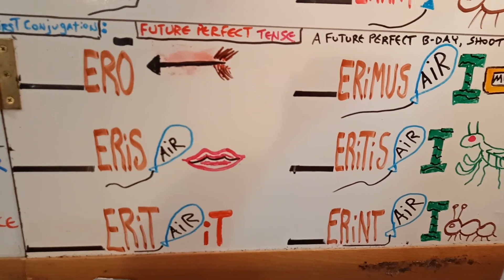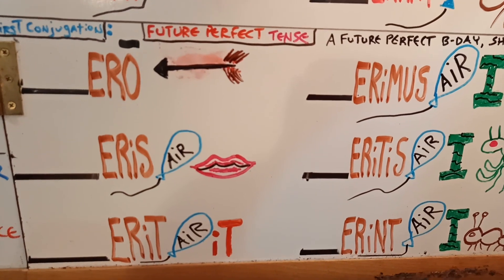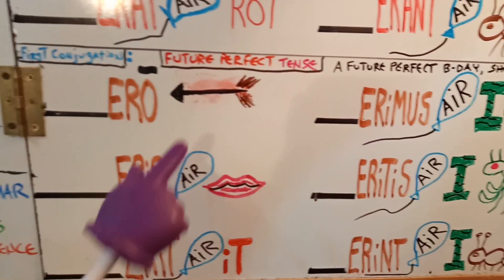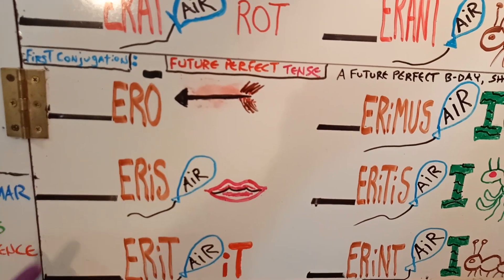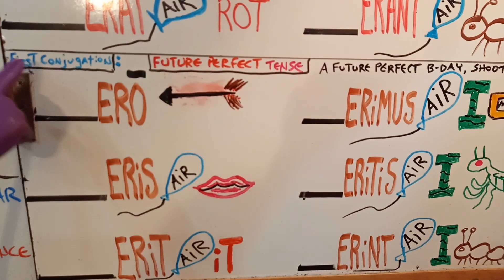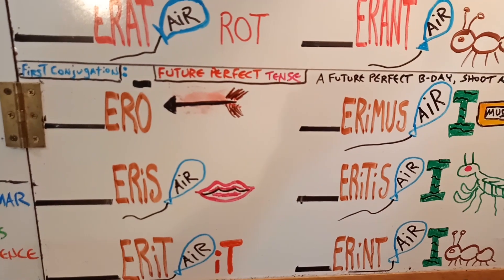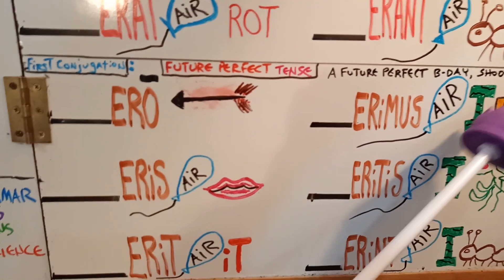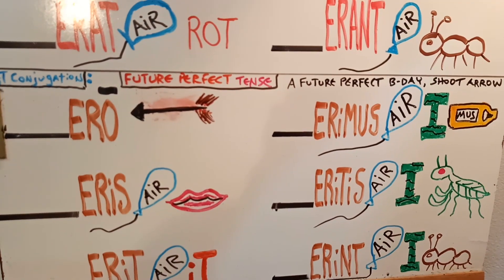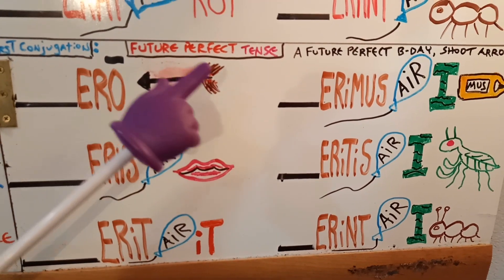Moving on to our Latin. This week is Future Perfect Tense. We'll use the thing to remember us: on a future perfect birthday, we will shoot an arrow. First conjugation, Future Perfect Tense: on a future perfect birthday, I will shoot my arrow. Ero, eris, erit. Erimus, eritis, erint. First conjugation, Future Perfect Tense.